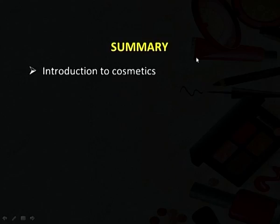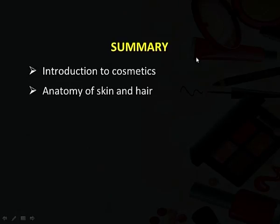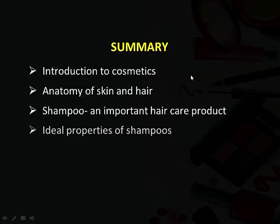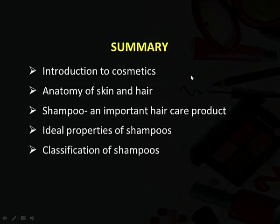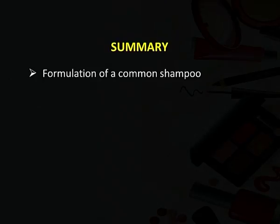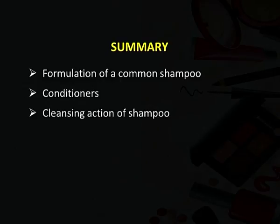Let us summarize what we have discussed today. We started with the introduction to cosmetics — what substances can be categorized under cosmetics. Then we discussed briefly the anatomy of the skin and hair. Then we discussed the important hair care product shampoo: its ideal properties, classification, basic ingredients, formulation of a common shampoo, conditioners, cleansing action, and quality tests. In our next session, we will discuss another hair care product — hair dye and also hair sprays. Thank you.